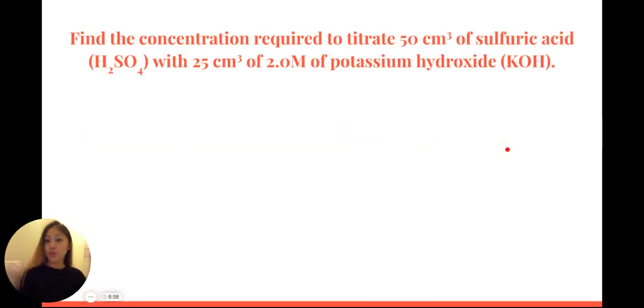Find the concentration required to titrate 50 centimeters cubed of sulfuric acid with 25 centimeters cubed of 2.0 molar of potassium hydroxide. First thing we do here is we need to balance the equation. We need to figure out how many moles are required.